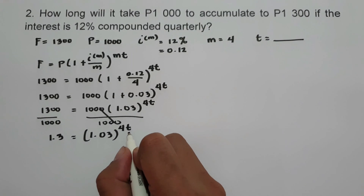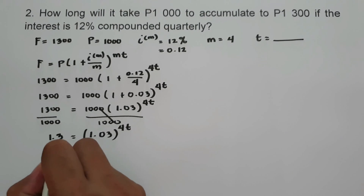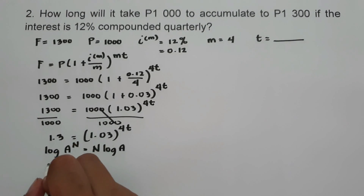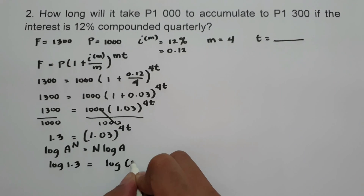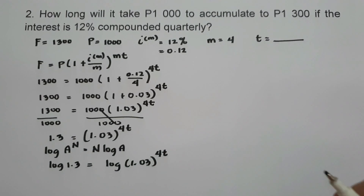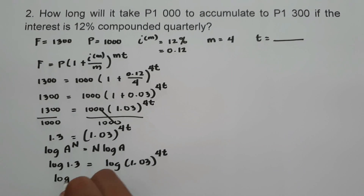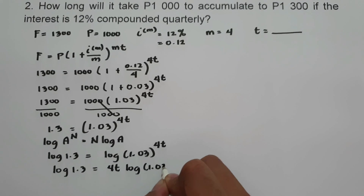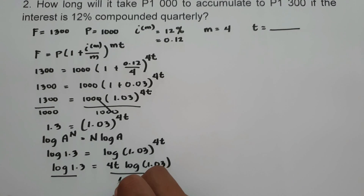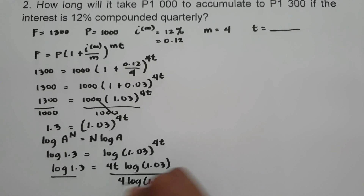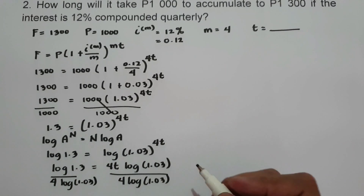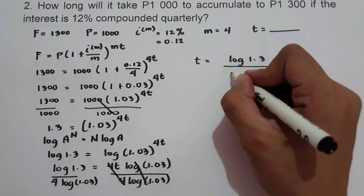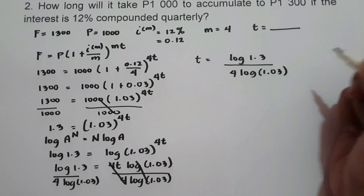To find the value of T, we use the logarithm property log A raised to N equals N log A. Taking the log of both sides: log 1.3 equals log 1.03 raised to 4T. Moving 4T in front: log 1.3 equals 4T times log 1.03. Dividing both sides by 4 log 1.03, we get T equals log 1.3 over 4 log 1.03.